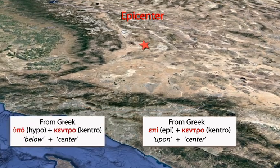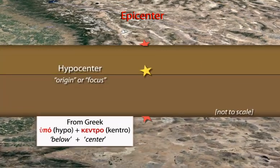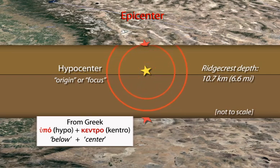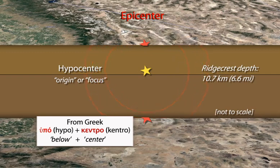An earthquake actually begins inside the Earth at the hypocenter. The hypocenter ranges from several to hundreds of kilometers below the epicenter, in Earth's outer brittle layers.